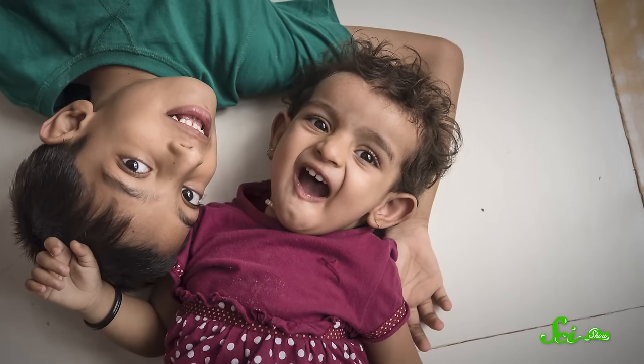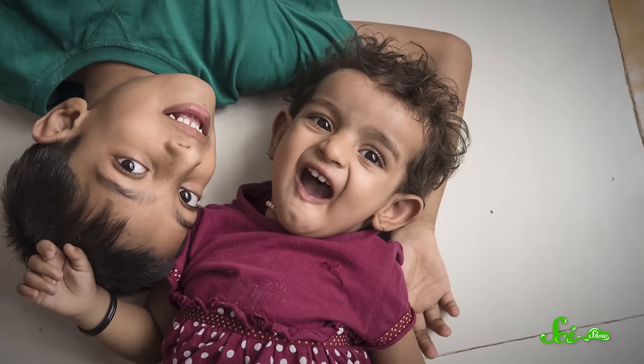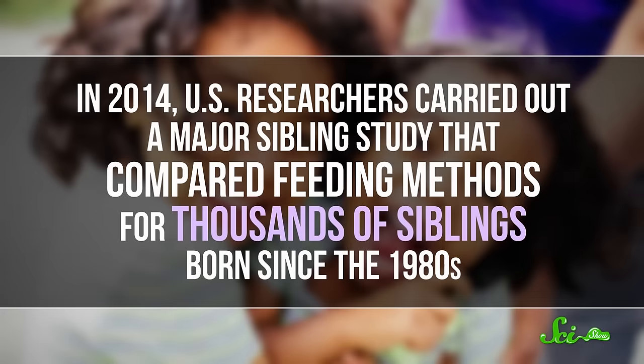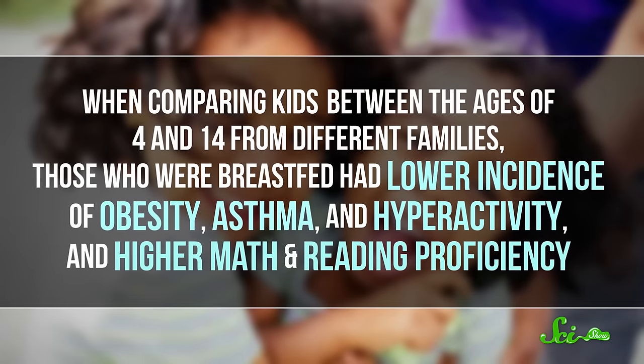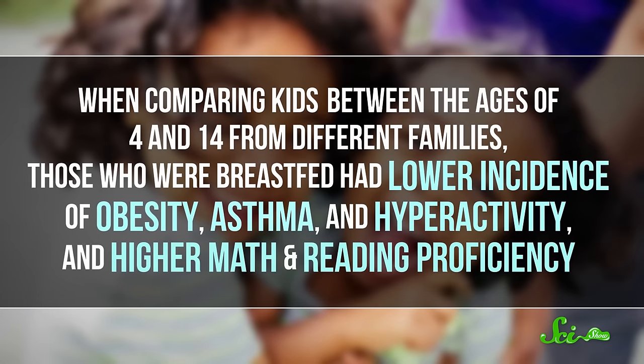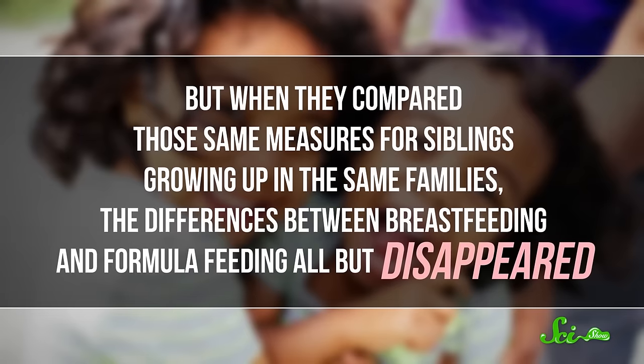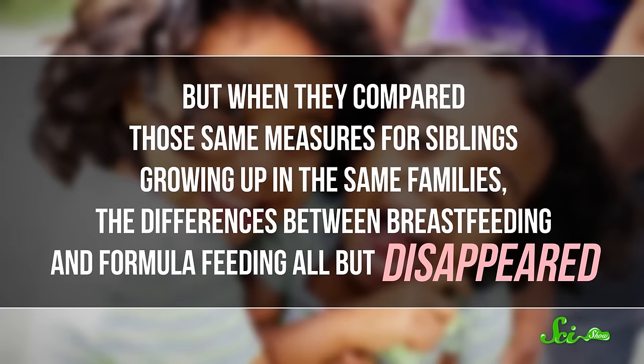One way that researchers have tried to wrangle these variables is to look at siblings. Siblings are exposed to a lot of the same socioeconomic factors, and often have the same parents. So if one was breastfed and the other wasn't, they can be compared to one another a little more directly, and some of those variables are controlled for. In 2014, U.S. researchers carried out a major sibling study that compared feeding methods for thousands of siblings born since the 1980s. When comparing kids from between the ages of 4 and 14 from different families, those who were breastfed had lower incidence of obesity, asthma, hyperactivity, and higher math and reading proficiency. But when they compared those same measures for siblings growing up in the same families, the differences between breastfeeding and formula feeding all but disappeared.